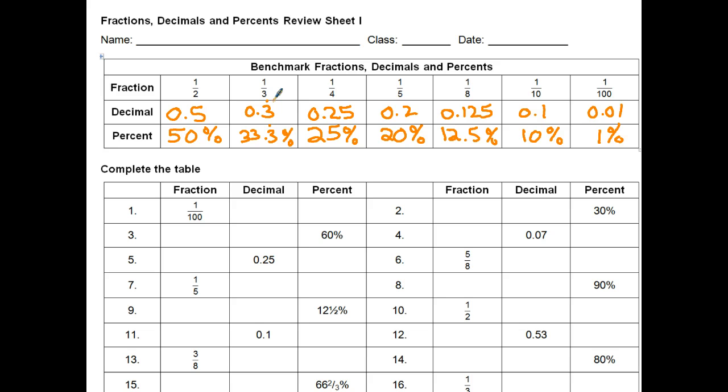Now once you know, for example, that 20% and one-fifth are the same number, let's say that you're given 60%, and you want to convert that to a fraction and a decimal. You say 60% is three times 20%. So as a decimal, 0.2 times three is 0.6, or you just move your decimal point back two places. And as a fraction, if 20% is one-fifth, 60% is going to be three-fifths.